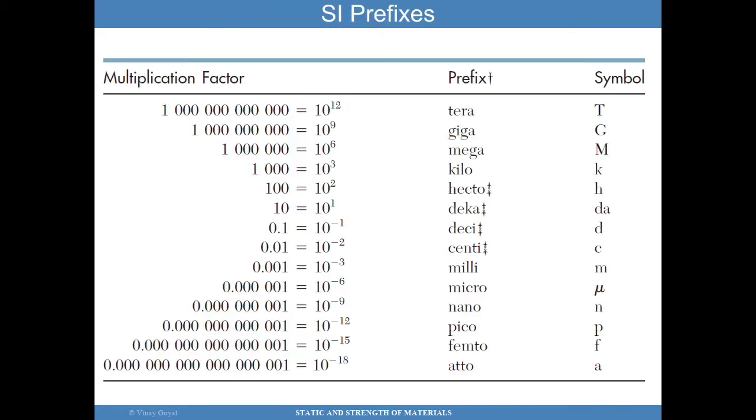There's some prefixes that are important for our expertise. I'll let you memorize them. They're in your book as well. Tera is 10 to the 12. Giga is 10 to the 9. You're going to use mega, 10 to the 6. Kilo is 10 to the 3. And so forth. So I invite you to kind of memorize the symbol and the prefixes that go along with them.